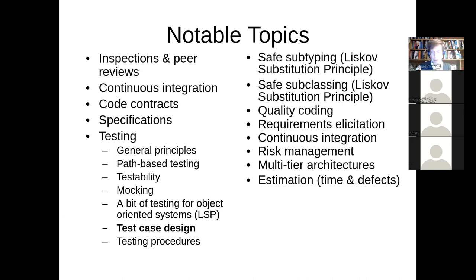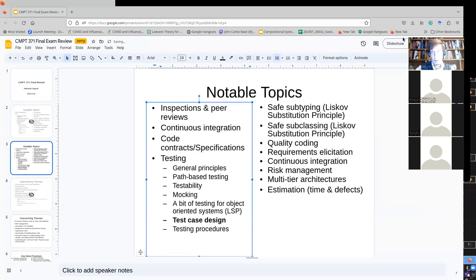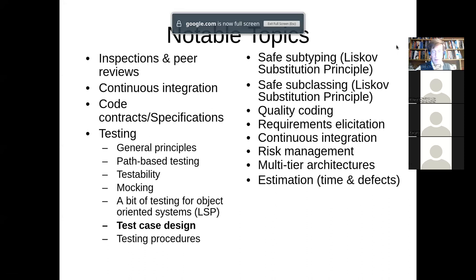Inspections and peer reviews — different types of peer reviews, how they differ from one another. Continuous integration — some understanding of what goes on there. What's the smoke test, for example? What role does it play? What other things, besides compilation, might be part of a continuous integration build? Code contracts or specifications — the idea of providing a specification for code, be it a class or a function.